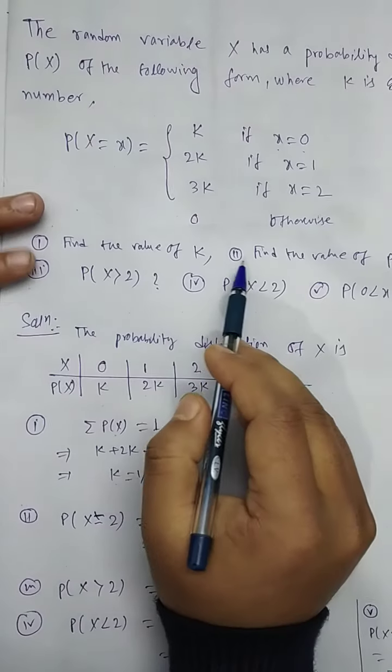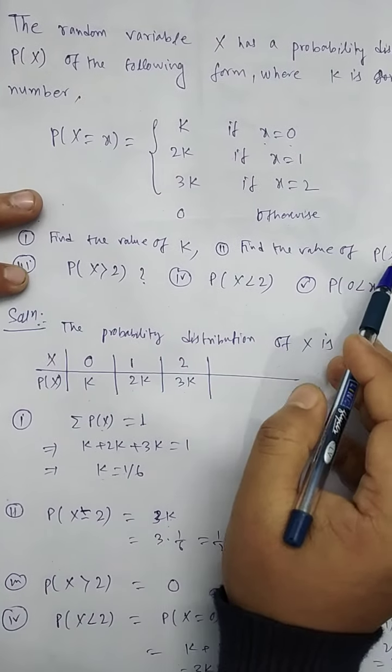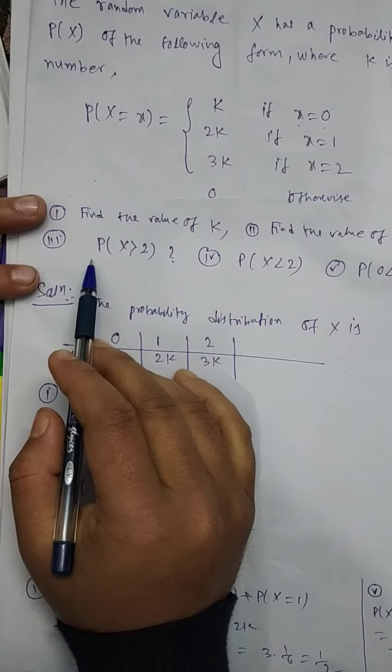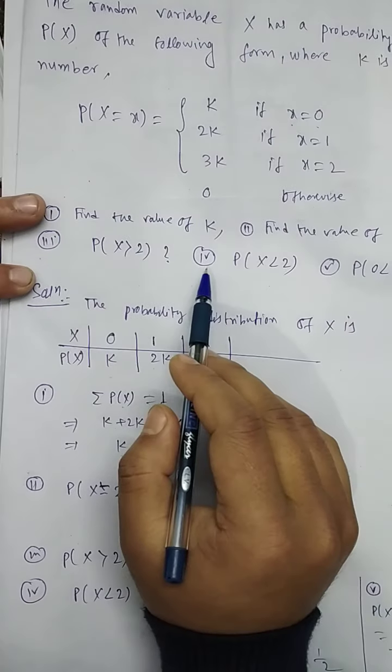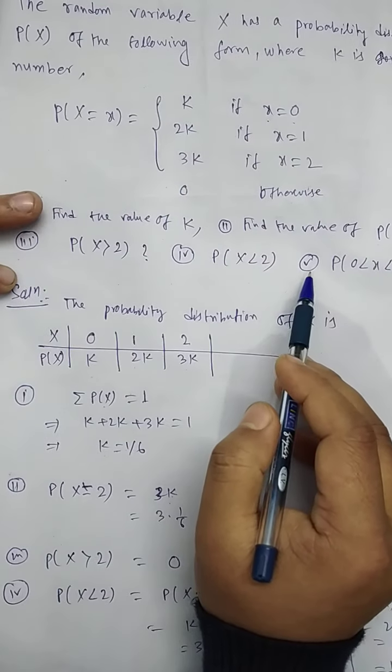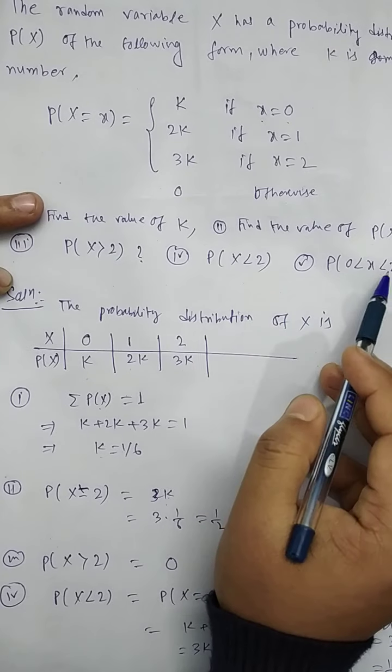Find: (1) the value of K, (2) the value of P(X = 2), (3) P(X > 2), (4) P(X < 2), (5) P(0 < X < 2).